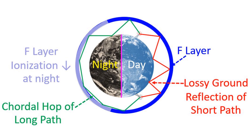This is how a signal received by long path propagation can be stronger than the short path signal, though the distance travelled may be much larger. This can be quite useful during a contest, allowing contacts not possible with short path propagation. A good knowledge of long path propagation from your geographic region to other regions — with timing and regions to which it opens — can be very useful in terms of multipliers and contest scores.